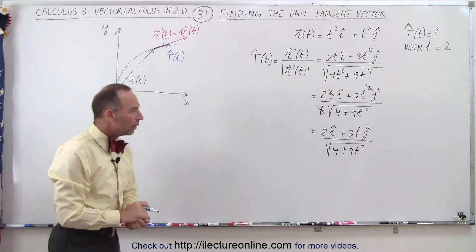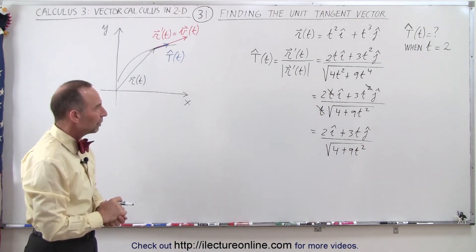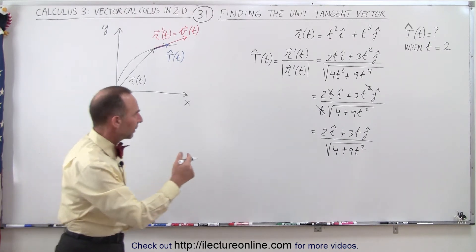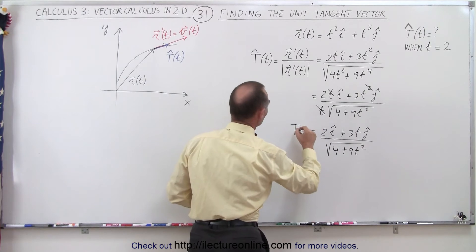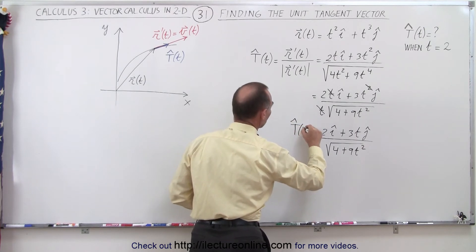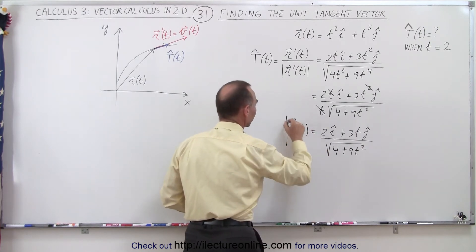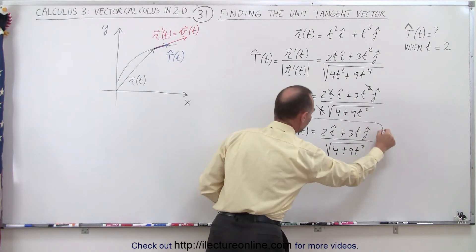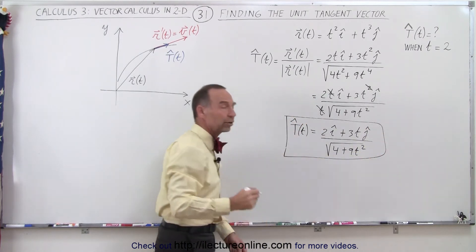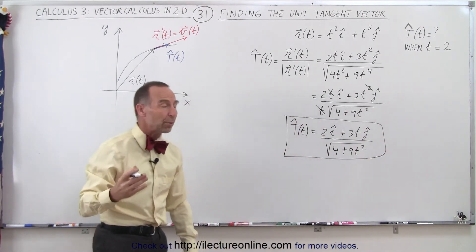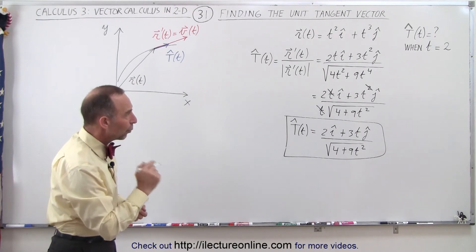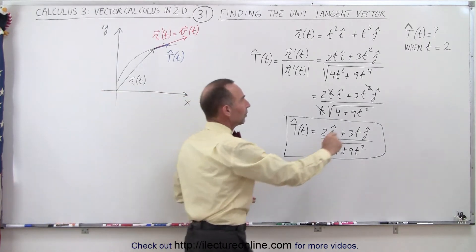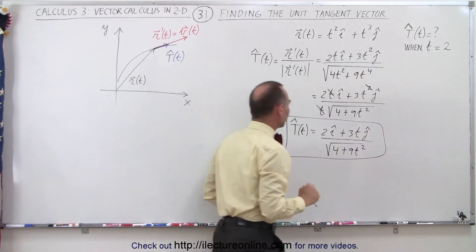So this becomes equal to 2 in the i direction plus 3t in the j direction, divided by the square root of 4 plus 9t squared. This is the general equation for the unit tangent vector as a function of the parametric variable t. Now we want to find the unit tangent vector when the parametric variable is equal to 2.